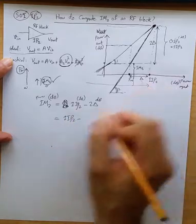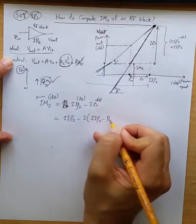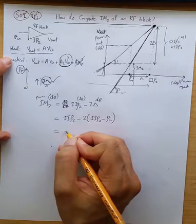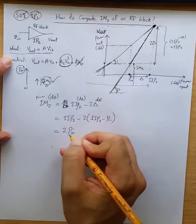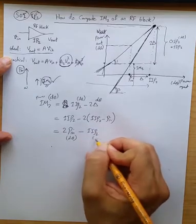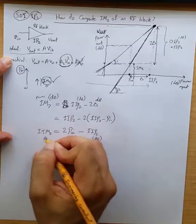So it's equal to IIP2 minus 2 times the quantity IIP2 minus P_in. So it becomes obviously 2*P_in in dB minus IIP2 in dB. And this is IIM2 or IIM2 input referred.